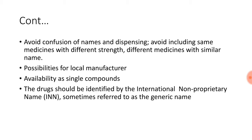Also avoid confusion in selection; consider the possibility of local manufacturers; check availability of the single compound — though if the combination is more effective, select the combination. Finally, drugs should be identified by their International Non-Proprietary Name (generic name).